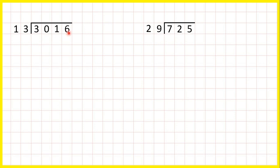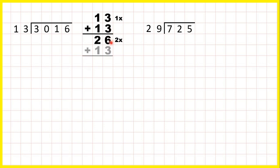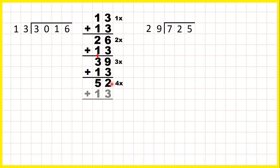Now 3016 divided by 13. So we need our 13 times table. 13 is 1 times. Add another 13: 26 is 2 times. Add another 13: 39 is 3 times. 52 is 4 times and 65 is 5 times 13. It ends in a 5, so we can be confident that we've got the correct working out.